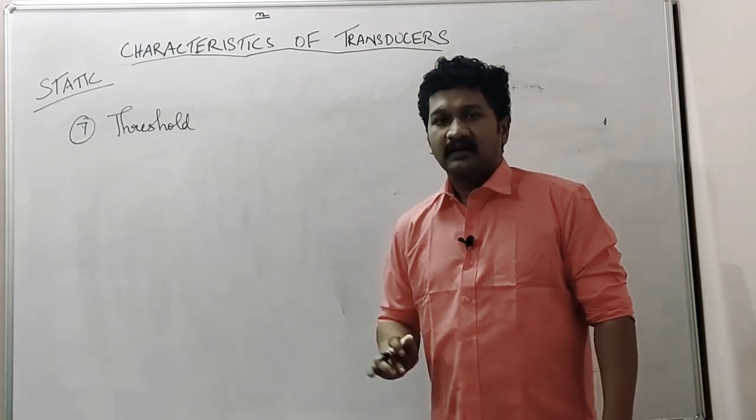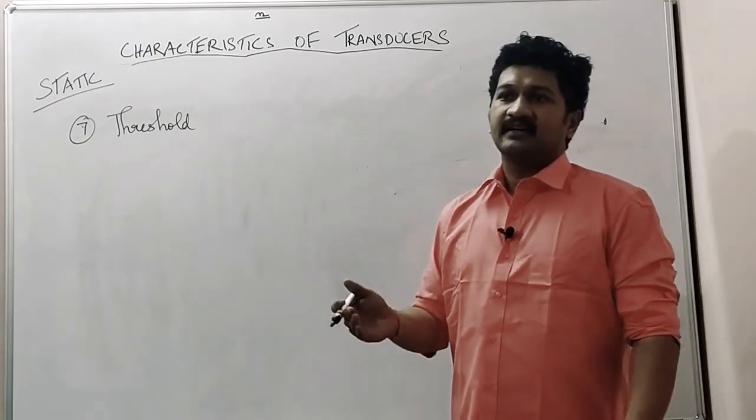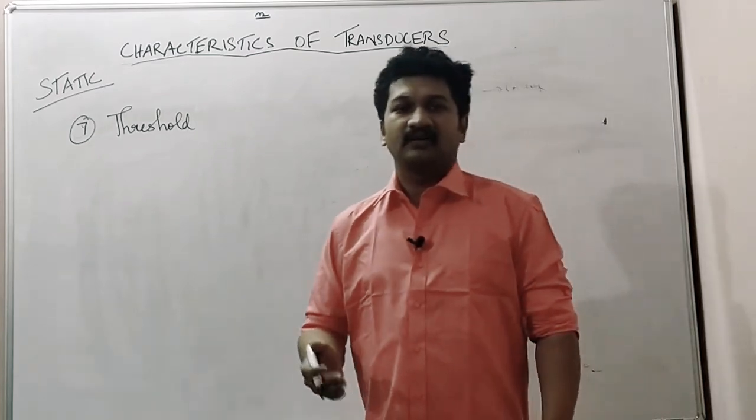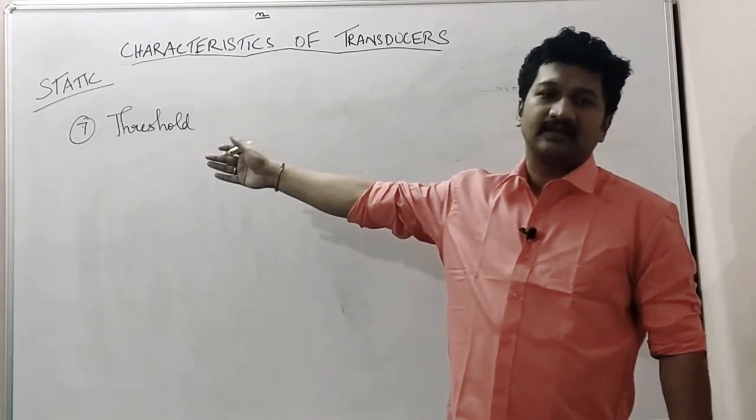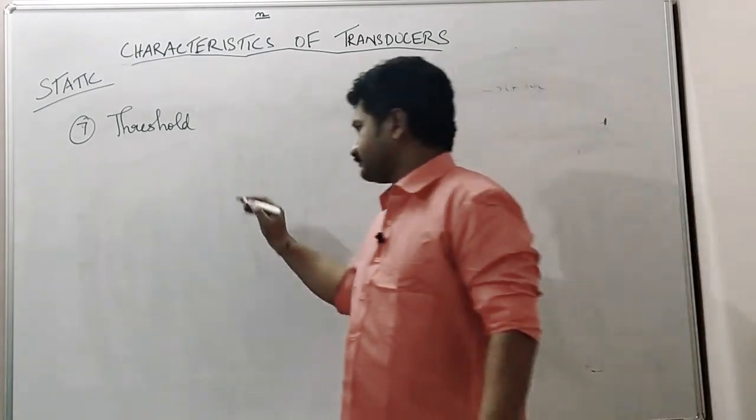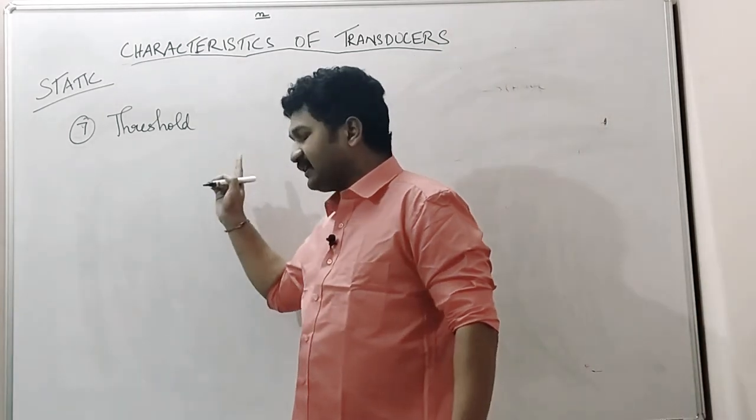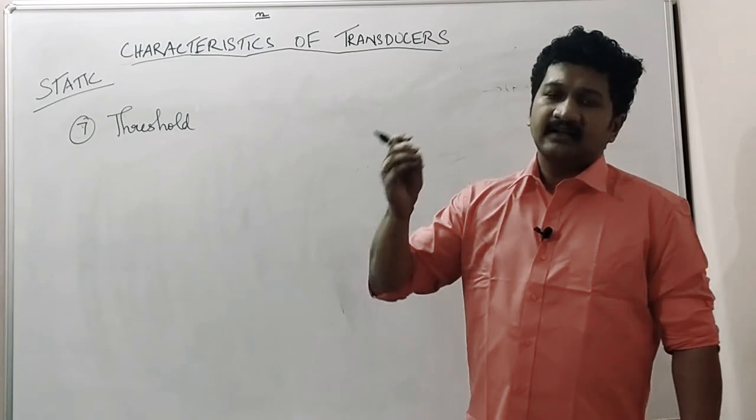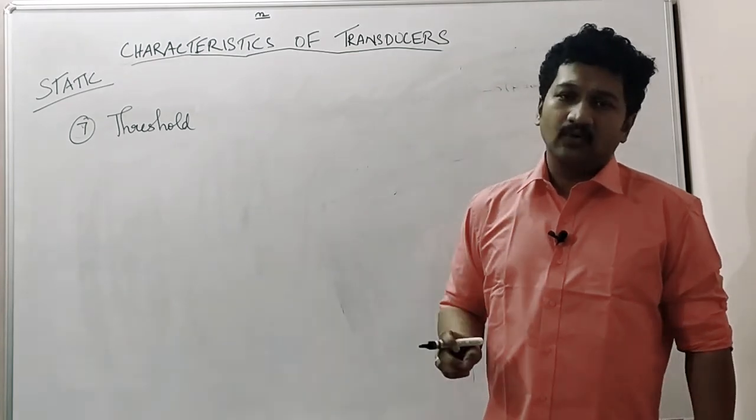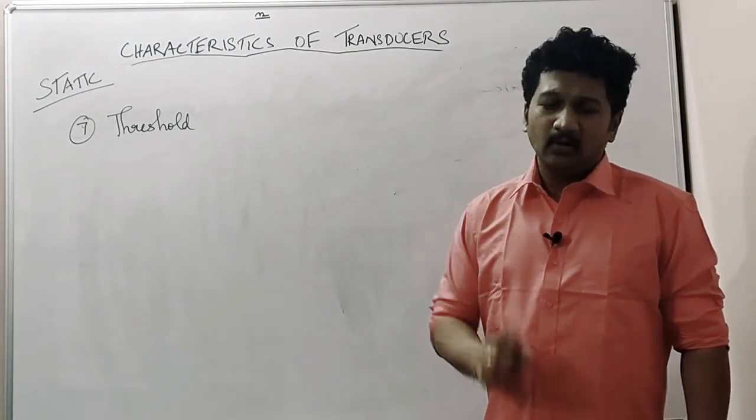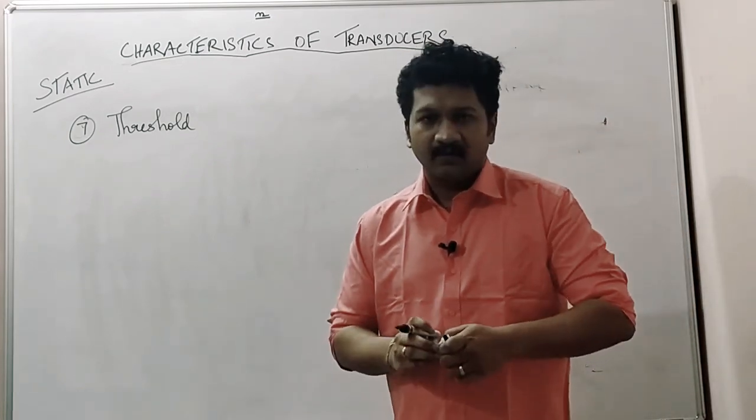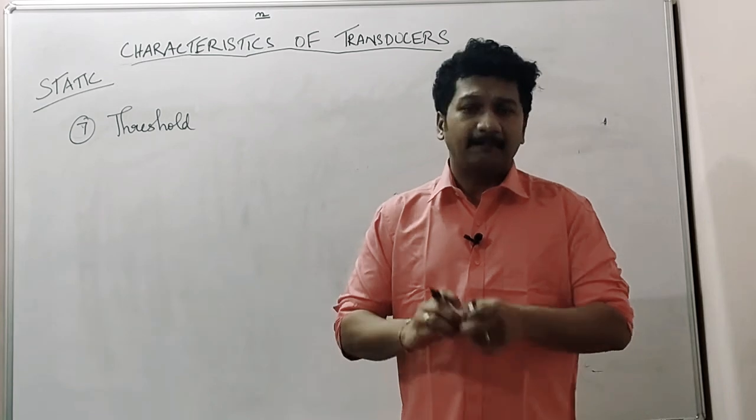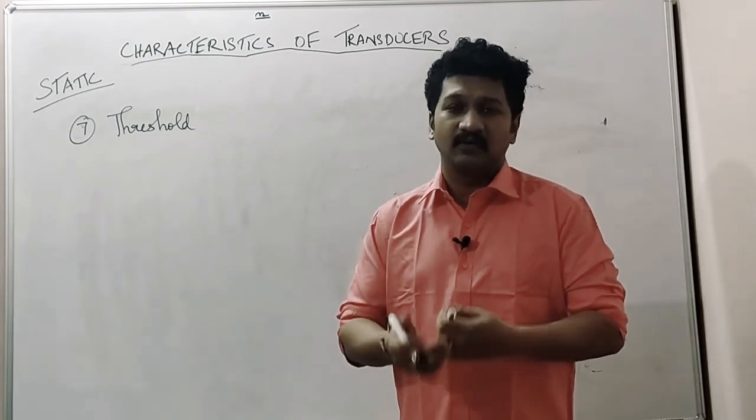So what is the meaning of threshold? While talking, we would say there is a threshold limit for certain things. Similarly, it is a scientific term. The threshold limit can be defined in two ways: it is the minimum value or minimum point below which the device or instrument does not work, or it is a point above which the device or sensor works.